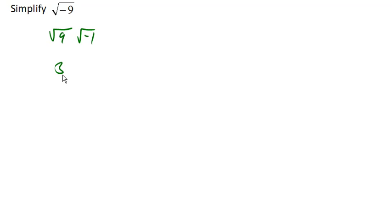And the square root of 9 is just 3. And the square root of negative 1 is that special imaginary number which we call i. And so the square root of negative 9, we're going to represent by 3i.